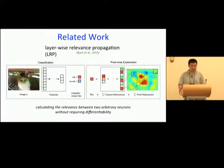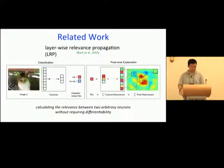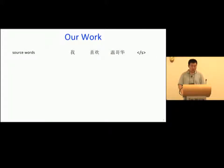Our work is inspired by the layer-wise relevance propagation proposed by Bach and others in 2015 for the image classification task. The basic idea is to decompose the classification as the sum of relevance for all pixels. Therefore, it is possible to know the contribution of each pixel to the final classification — for example, the image identified as a cat in this figure. The major advantage of LRP is that it is capable of calculating the relevance between two arbitrary neurons without requiring differentiability. Our work adapts LRP into neural machine translation.